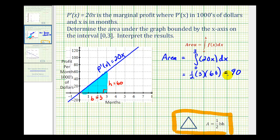And now to help us understand what this means, notice that we multiplied the profit per month in thousands of dollars by the number of months. So this 90 is not only the area of this triangle, it also represents the thousands of dollars of profit for the first three months. So the profit for the first three months would be 90,000 dollars based upon this situation.